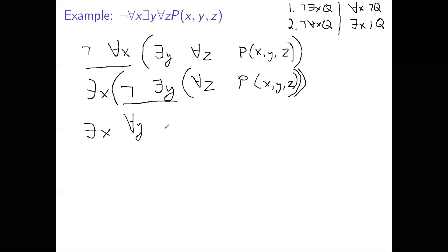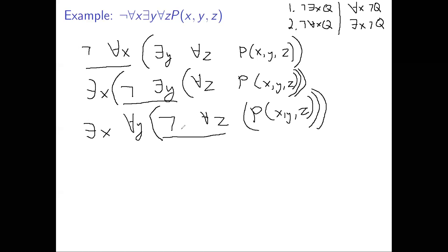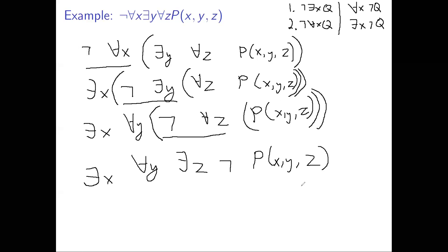So we have: exists-x, for-all-y, not, for-all-z, P(x,y,z). The x and y quantifiers have no negations in front of them, but we have not-for-all-z. Applying rule two, not-for-all-z becomes exists-z not. Final result: exists-x, for-all-y, exists-z, not P(x,y,z). So not-for-all-x exists-y for-all-z P(x,y,z) is equivalent to exists-x for-all-y exists-z not-P(x,y,z).